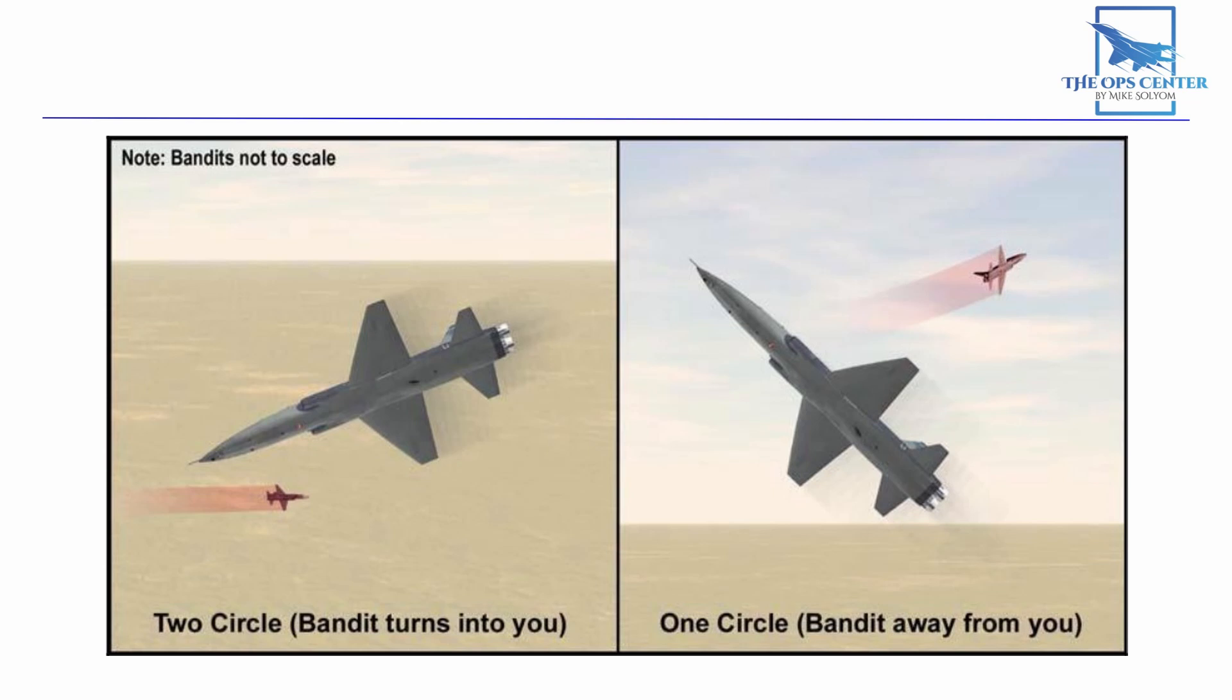Conversely, turning away from you will initiate a one-circle pattern. In a two-circle fight while flying your best sustained rate turn, you might come across a situation where your turn circle isn't quite aligned with the Bandit's turn circle. This could produce a yo-yoing effect as the Bandit moves up and down your canopy.